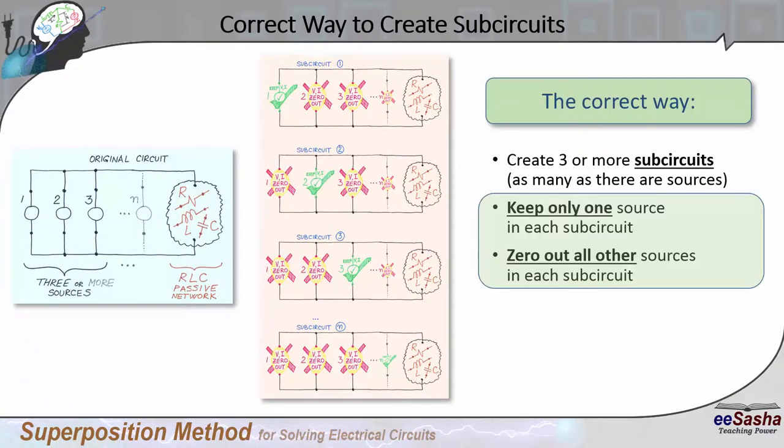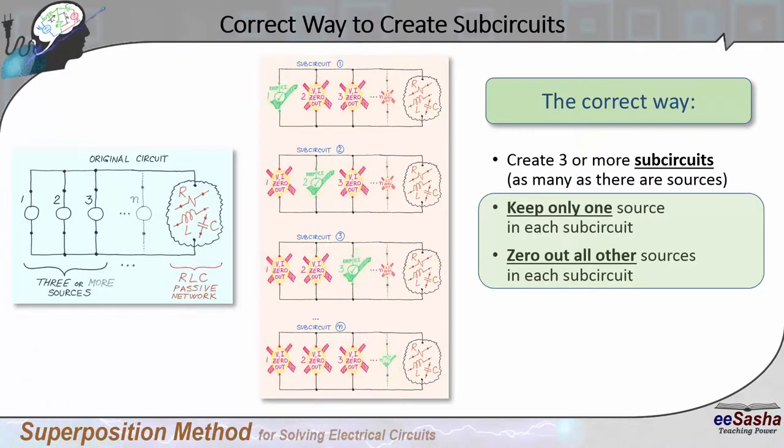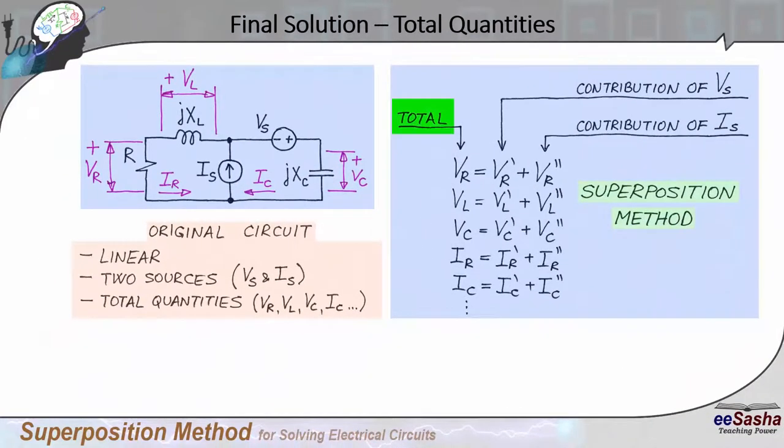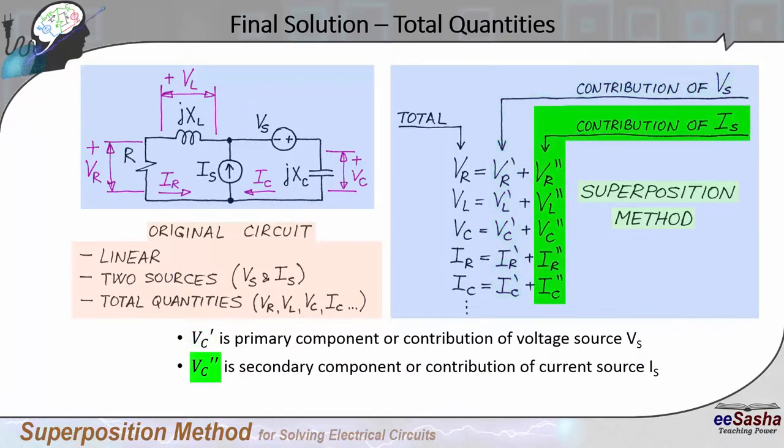In short, what is superposition method? It is one of the methods used to calculate voltages and currents in electrical circuits. In that particular circuit, we normally have multiple sources. Otherwise, superposition method doesn't make sense. If we have a circuit with multiple sources, then we use the superposition method.